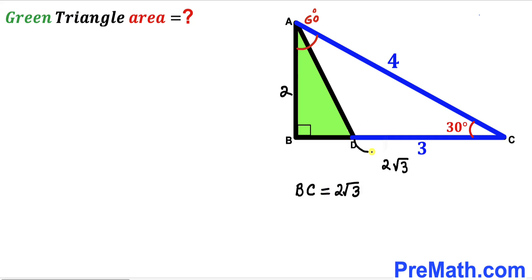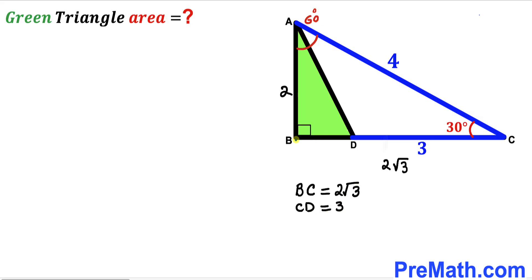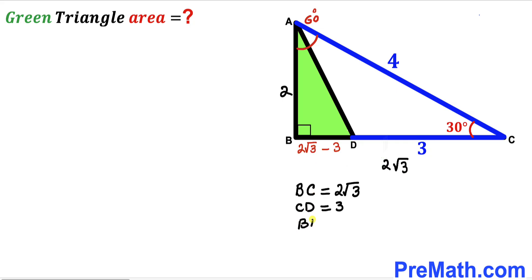Our segment CD length is 3. So the tiny segment BD length has got to be BC minus CD, which is 2√3 minus 3. Therefore, BD = 2√3 − 3.